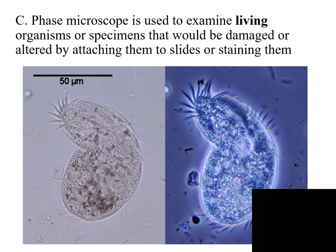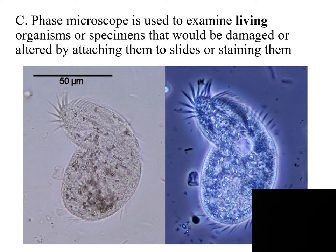The third type of microscope is the phase microscope, and it is used to examine living organisms or specimens that would be damaged or altered by attaching them to slides or staining them. Most items we look at in class are heat-fixed to the slide, which alters the shape and kills the specimen, then stained and viewed. Sometimes you want to see a specimen that has not been heated, altered, or stained — in that case, you would use the phase microscope to look at living organisms.